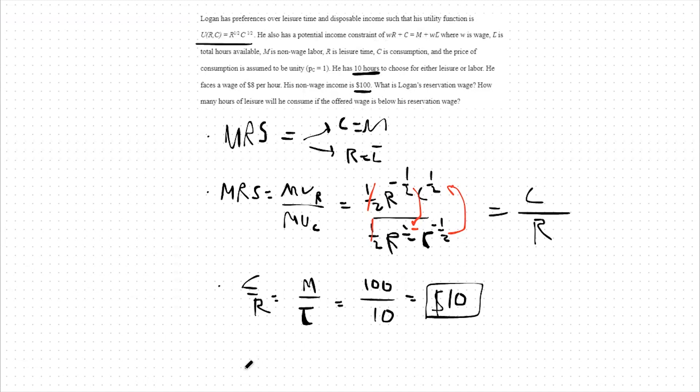For the second part of our question, we say that we're faced with an $8 wage. How many hours would we work? In this case, we would work zero hours.